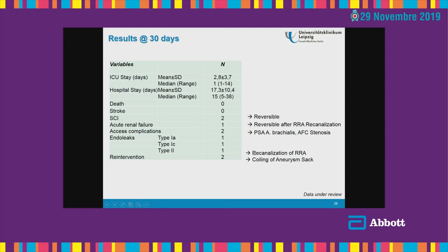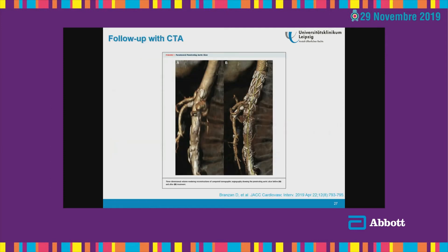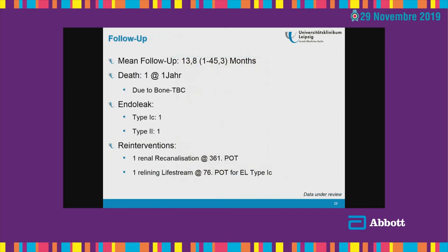There were two reinterventions: re-canalization of a previously occluded renal artery and coiling of an aneurysm. We follow these patients with a mean follow-up of 13.8 months. We had one death at one year due to a non-aneurysmal cause. There were further type 1C and type 2 endoleaks — the 1C endoleak was treated. We had one renal occlusion in follow-up, which was successfully re-canalized.